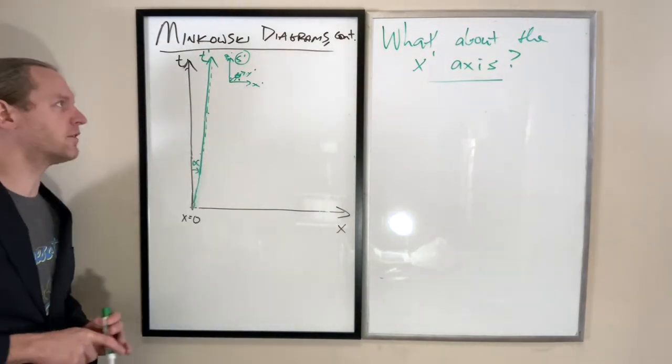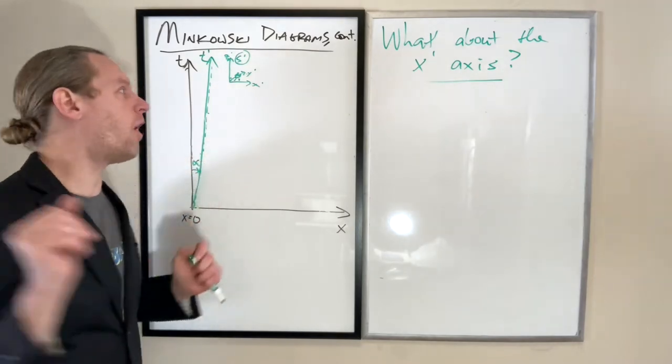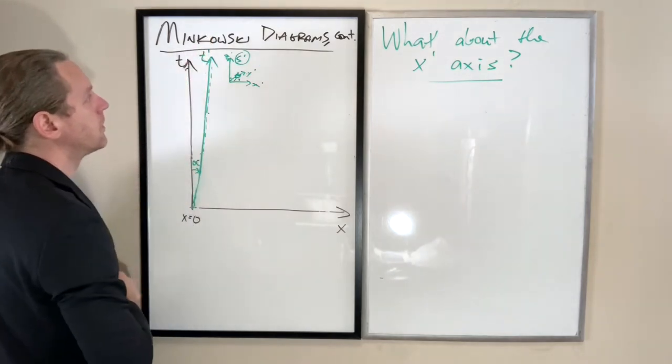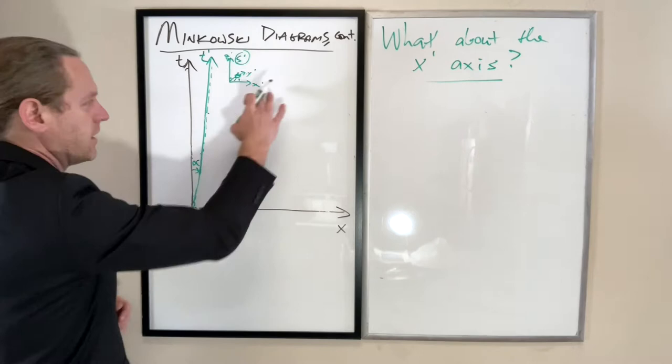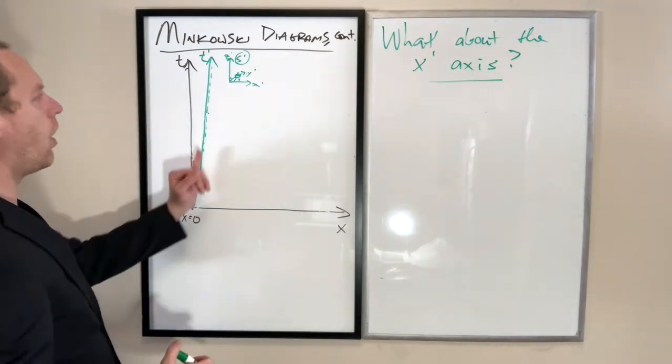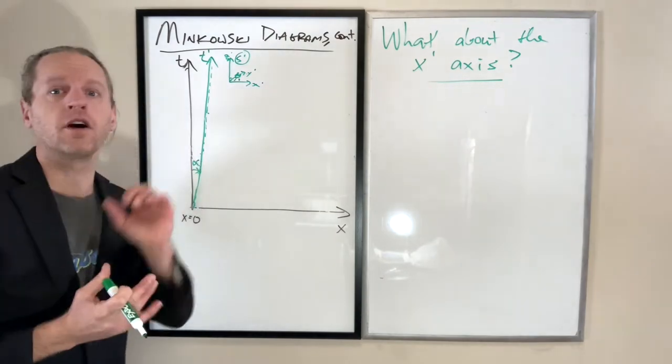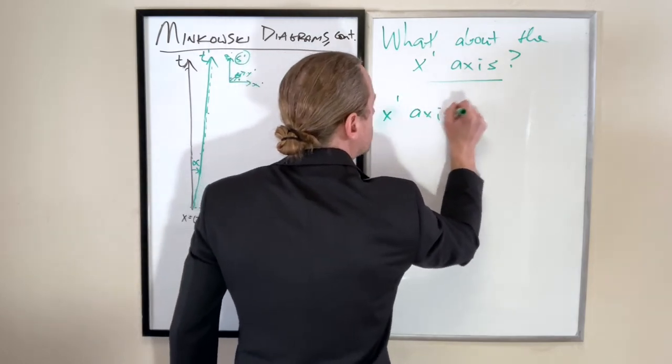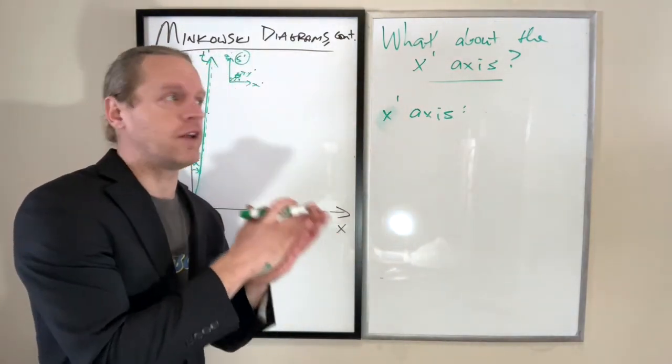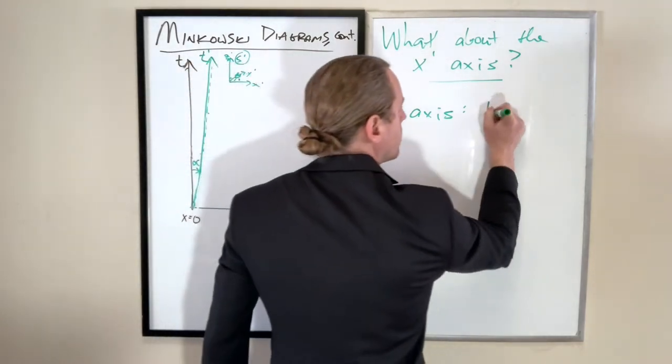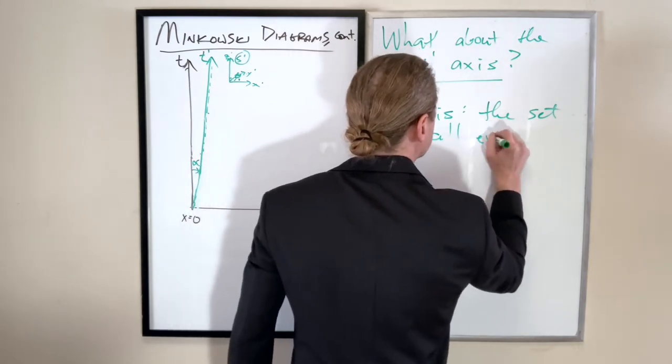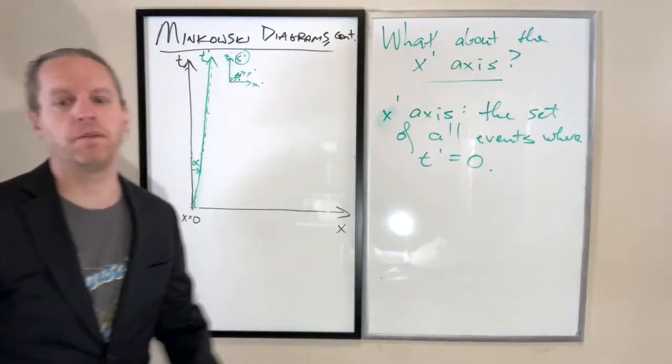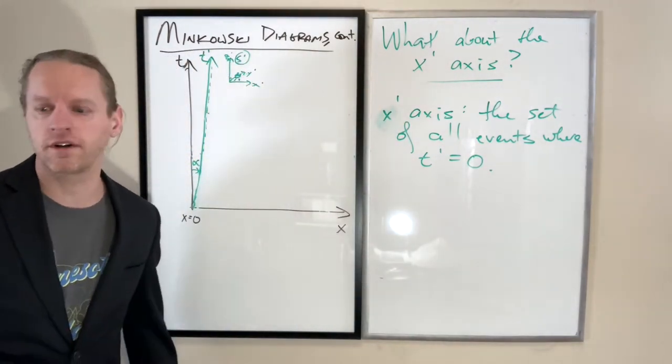How do we define the x-prime axis? We defined the t-prime axis to be the locus of all points on this graph where the x-prime position would be zero. So we now need to use the same reasoning. The x-prime axis is simply just the set of all events where t-prime equals zero.